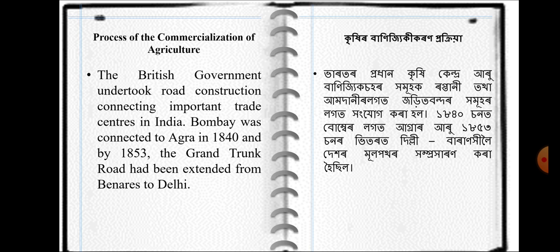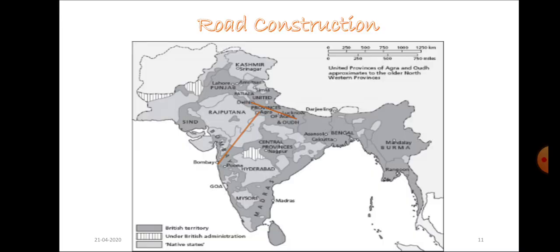The process of commercialization was also supported by rapid road extension. Before the railways, it was the roadways that supported the foundation and extension of the British Empire in India. The British government undertook road construction connecting important trade centers — Bombay was connected to Agra in 1840, and by 1853 the Grand Trunk Road had been extended from Banaras to Delhi. Using the map, we can see how this road connectivity helped the easy collection and transportation of crops from the field to industry.